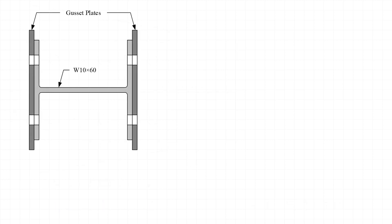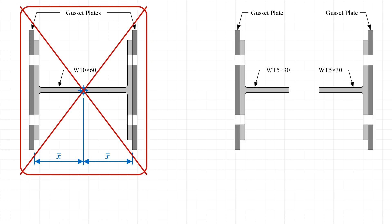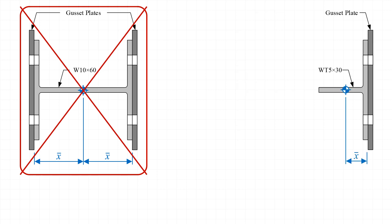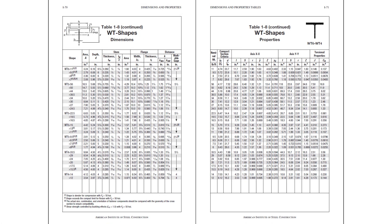Generally x-bar is taken as the connection eccentricity measured from the centroid of the member to the flange surface of the connection. However, since the W section is connected only through its flanges, we don't use this case directly. Instead, we break the W section into two WT's and consider the eccentricity of each one. So a W10 by 60, if split in half, would be two WT5 by 30s. The value of x-bar used in the shear lag reduction coefficient is taken from the centroid of one WT5 by 30 to the flange surface of that T. We refer back to Chapter 1 of the AISC manual and look up properties for the WT5 by 30.